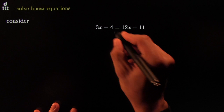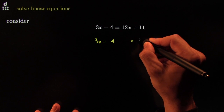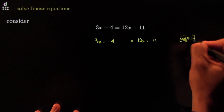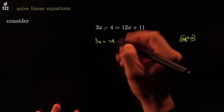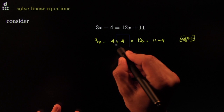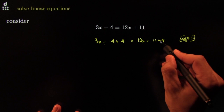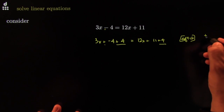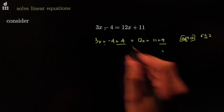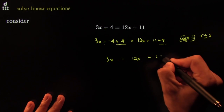First, I don't like subtraction, so if I change everything to addition — using the definition of a minus b — life would be better: 12x plus 11. Now I don't like this negative 4 here, so the perfect medicine is to add its killer, positive 4. Since it's stuck to the rest of the expression with a plus, I need the additive inverse, which is positive 4. I add that to both sides. Now I have 3x is equal to 12x plus 15.